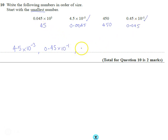Then we've got 45, originally written as 0.045 times 10 to the 3, and that leaves us with the largest number, which is 450.